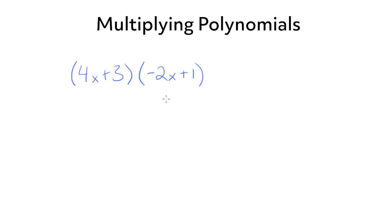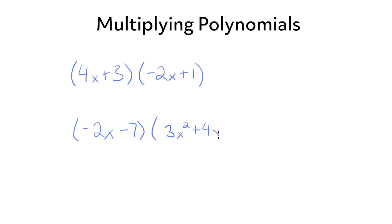And then we're going to take a look at multiplying a binomial, something like negative 2x minus 7, times a trinomial, which would be like 3x squared plus 4x minus 9. So even though we're only working through these two types of problems, the steps we're going to use will work for even larger polynomials.